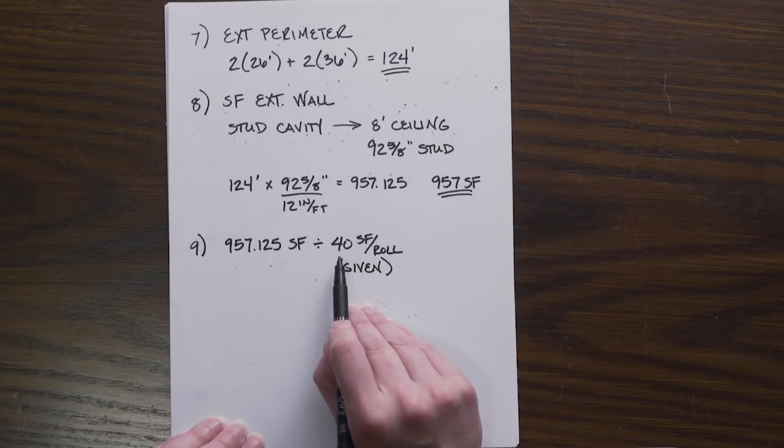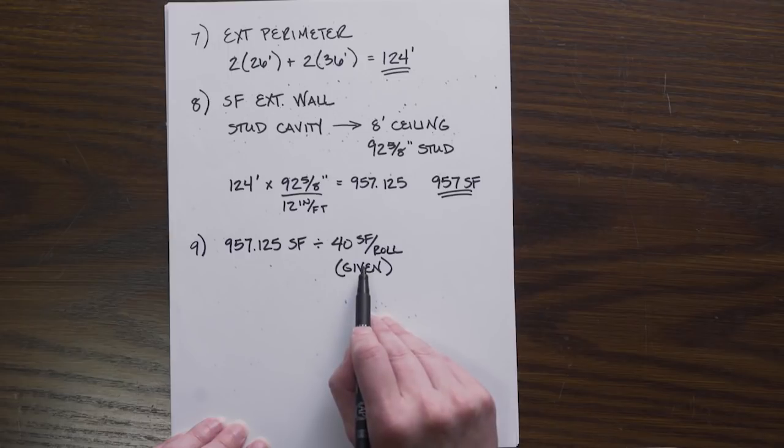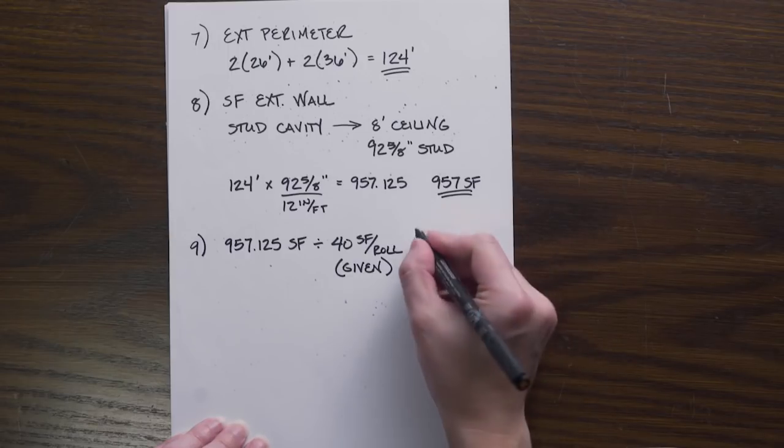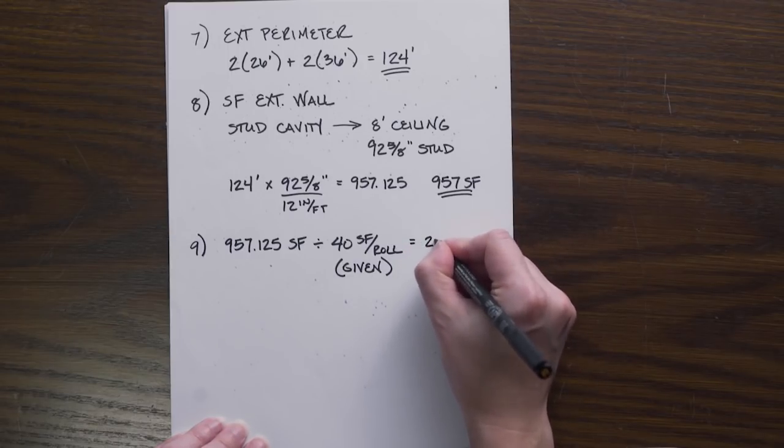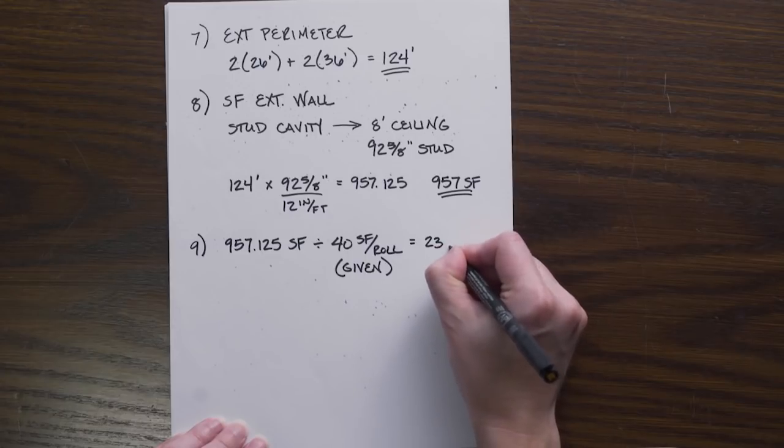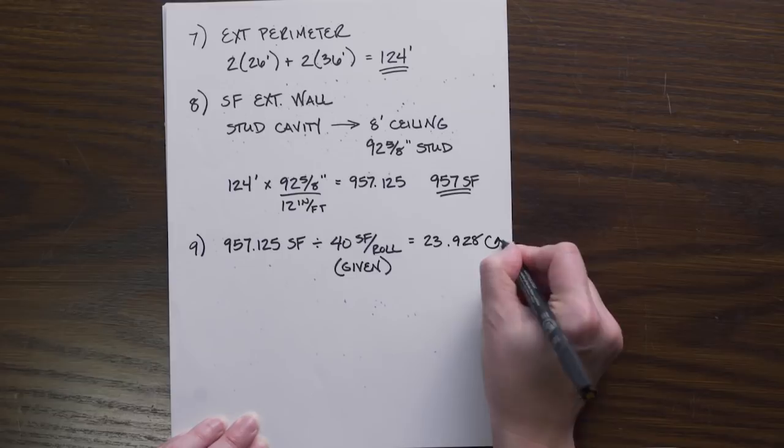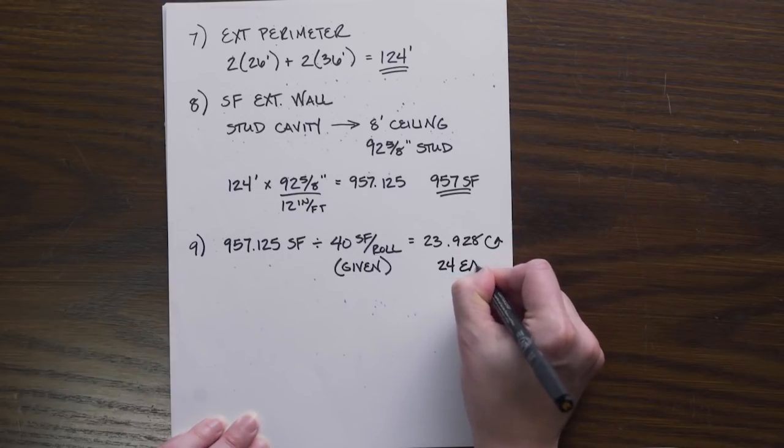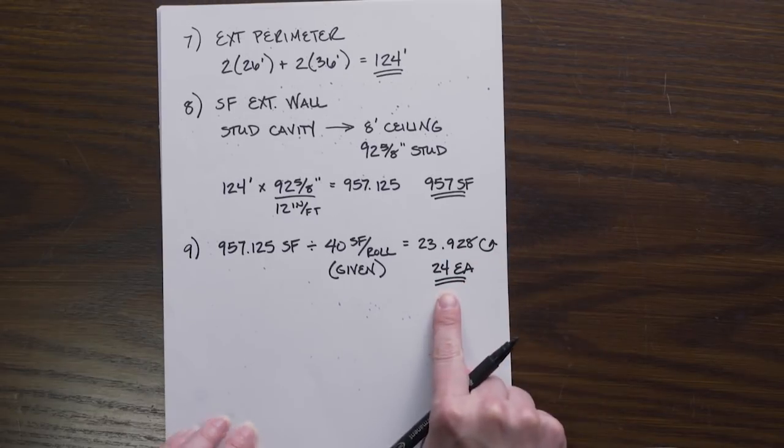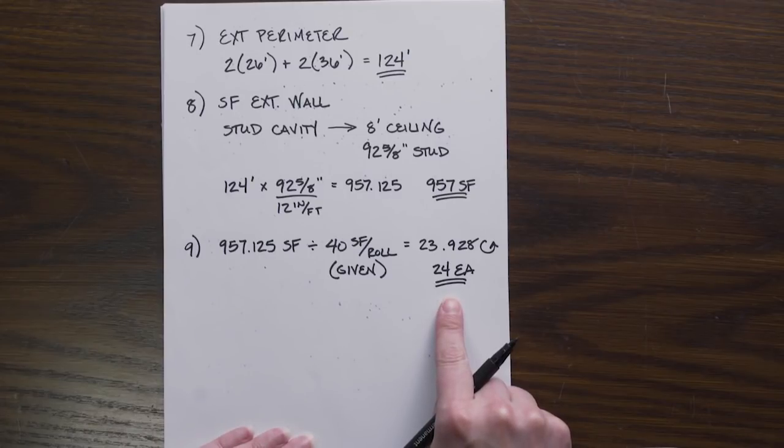We are using the 40 square foot roll. This is not a constant, this will change, so make sure you're paying attention on your problem set what this number is that's given. From that we can determine this is 23.928, which we round up to the nearest whole number: 24 rolls of insulation that we need using the square foot method.